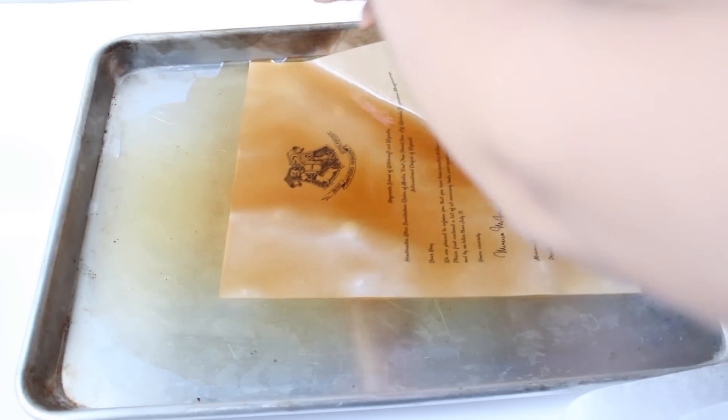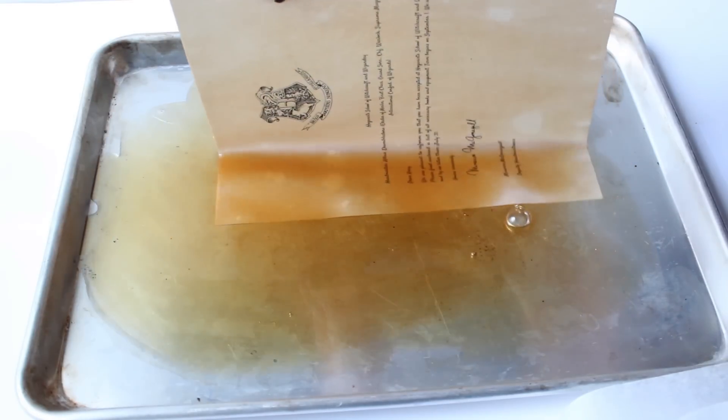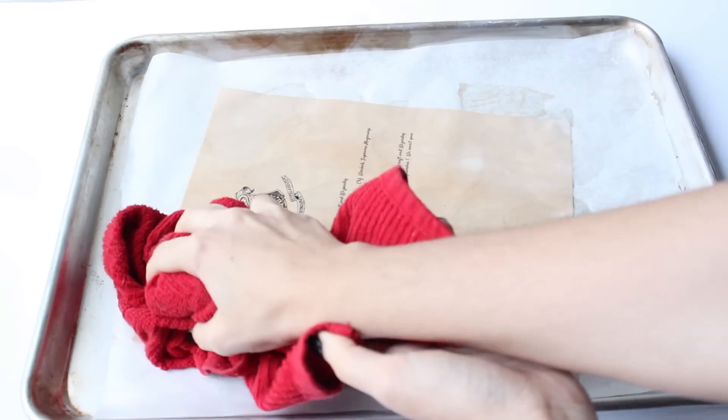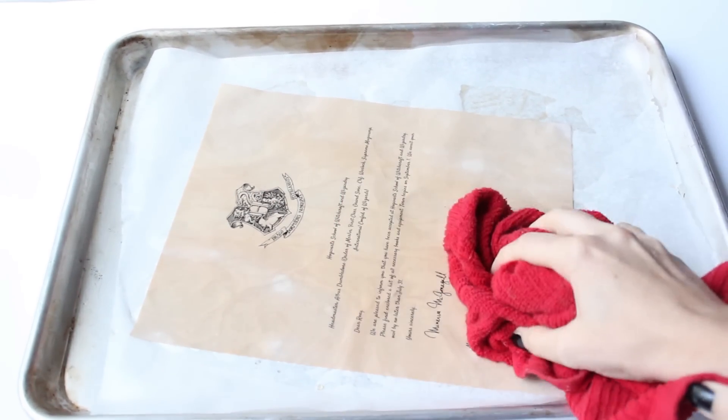Then transfer the letter on a baking pan on top of some baking paper and put it in the oven for 5 or 10 minutes at 375 degrees Fahrenheit, checking the letter often. You don't want to burn it.